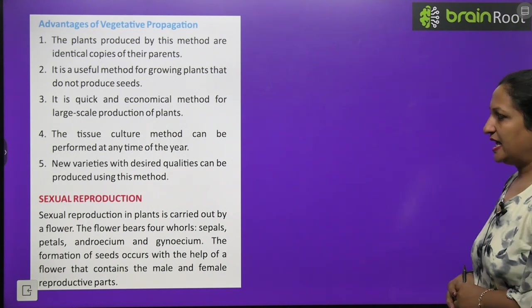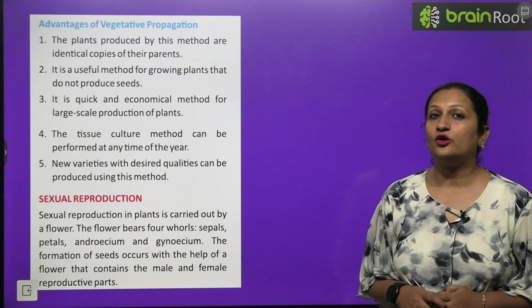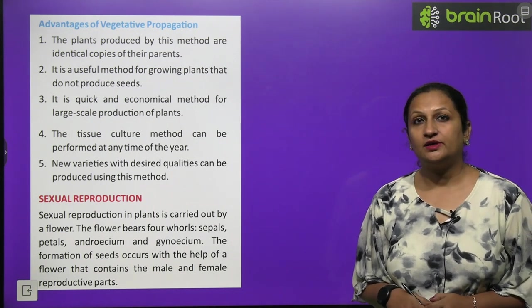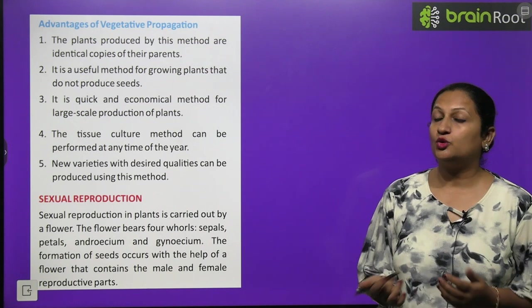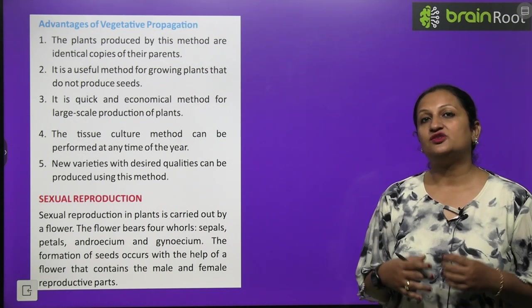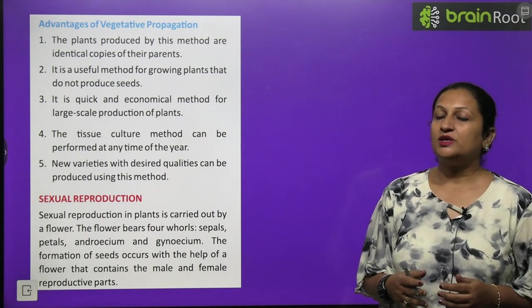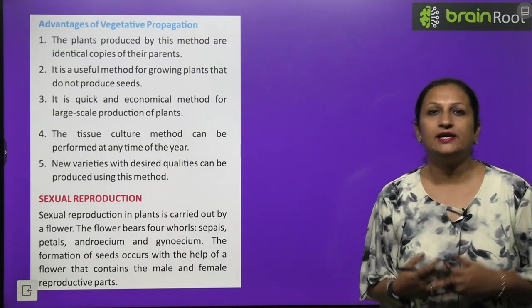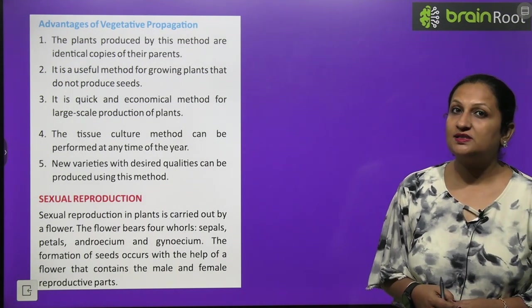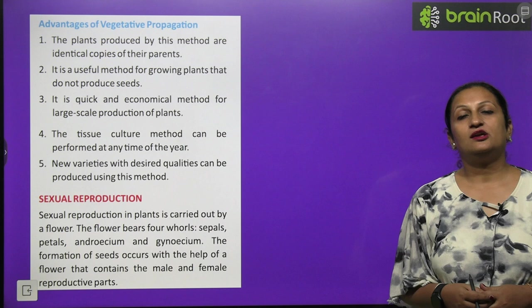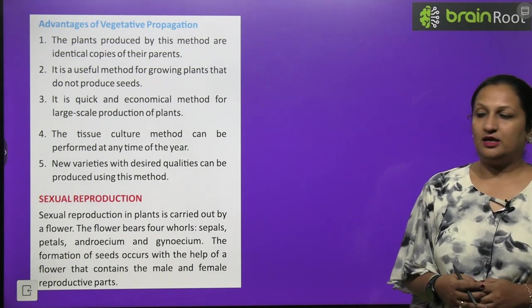Now children, sexual reproduction. As the name indicates, sexual reproduction is by the reproductive organ of the plant which we call flower. Now in flower there is male gamete and female gamete. So on this basis we can divide the flowers into two parts. One is bisexual flowers in which the male and female parts are both present, or then we can call it unisexual plants in which the plant has either male gamete or female gamete.